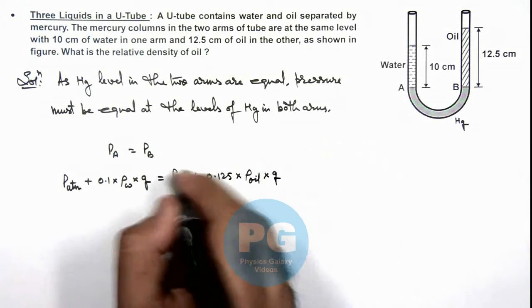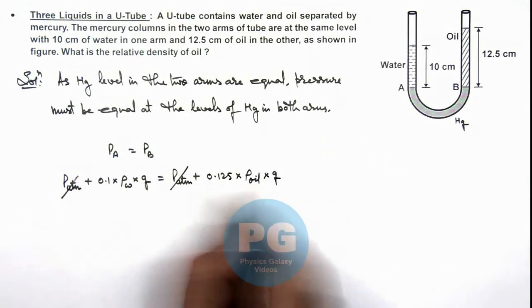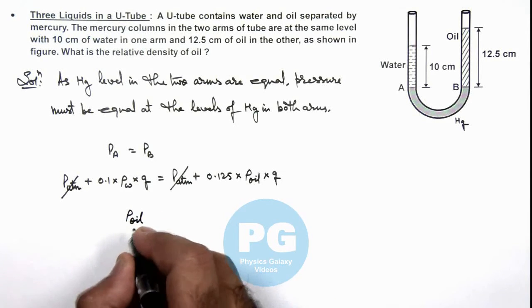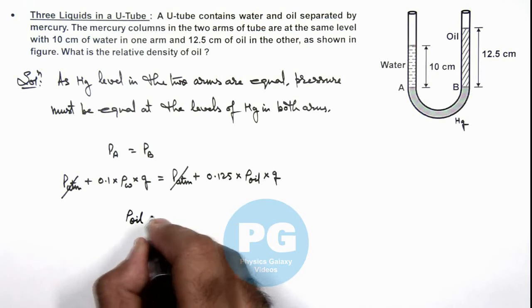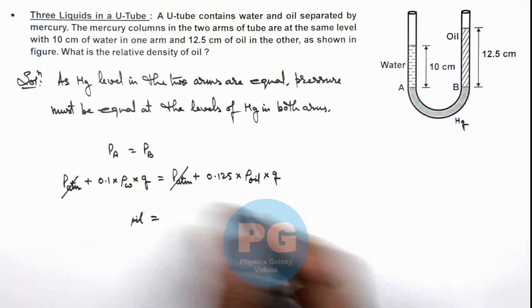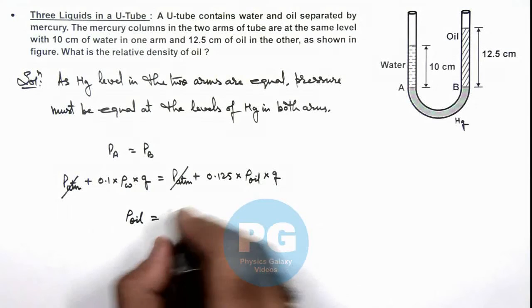So in this situation P_atmospheric gets cancelled out and this will give us the value of ρ_oil is equal to, or we can directly calculate the value of ρ_oil in terms of ρ_w and then the relative density, this is